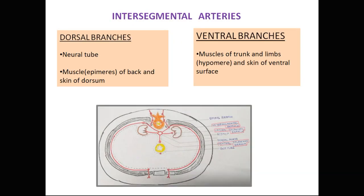The intersegmental arteries supply the derivatives of the somites. Each intersegmental artery divides into a dorsal branch and a ventral branch. The dorsal branch supplies the muscles of the back and the overlying skin, and also gives rise to a spinal branch that supplies the neural tube. The ventral branches supply the muscles of the trunk and limbs and the overlying skin.